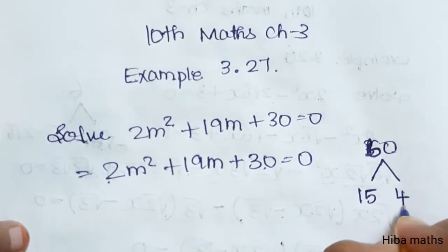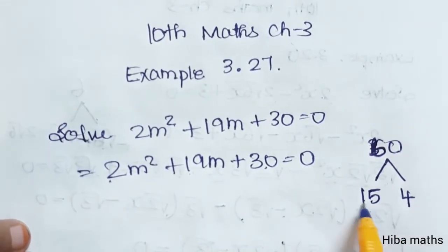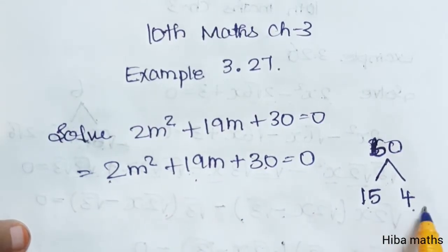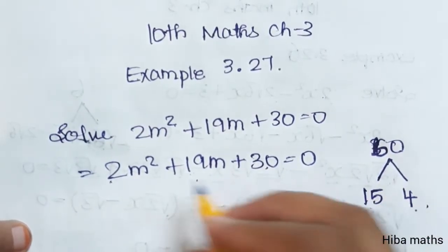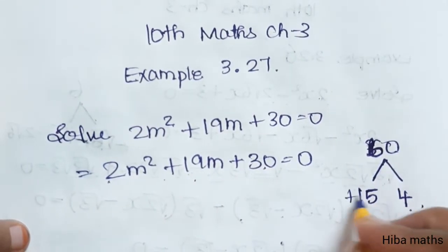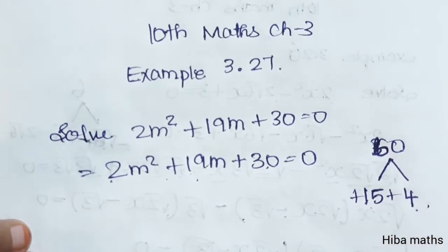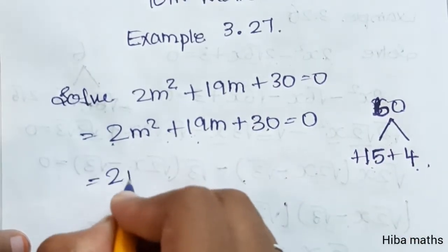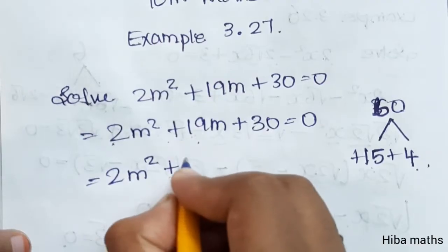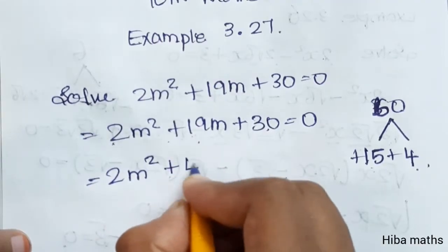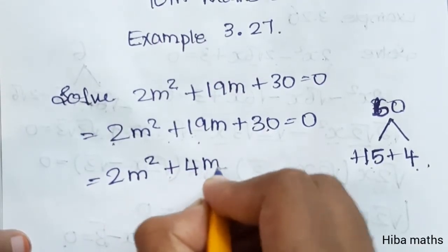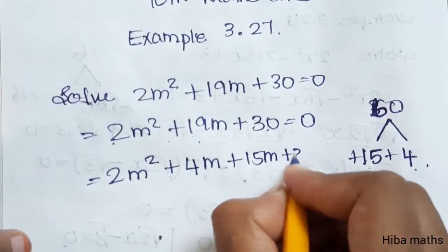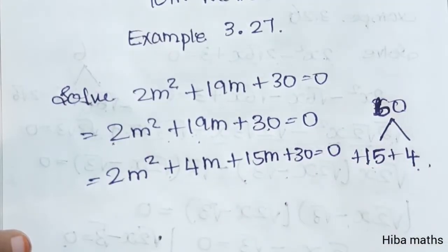We split the middle term: 15 into 4 gives 60, and 15 plus 4 is 19, and 15 into 4 is equal to 60. Both signs are plus, so the next step is to split: 2m squared plus 4m plus 15m plus 30 is equal to 0.